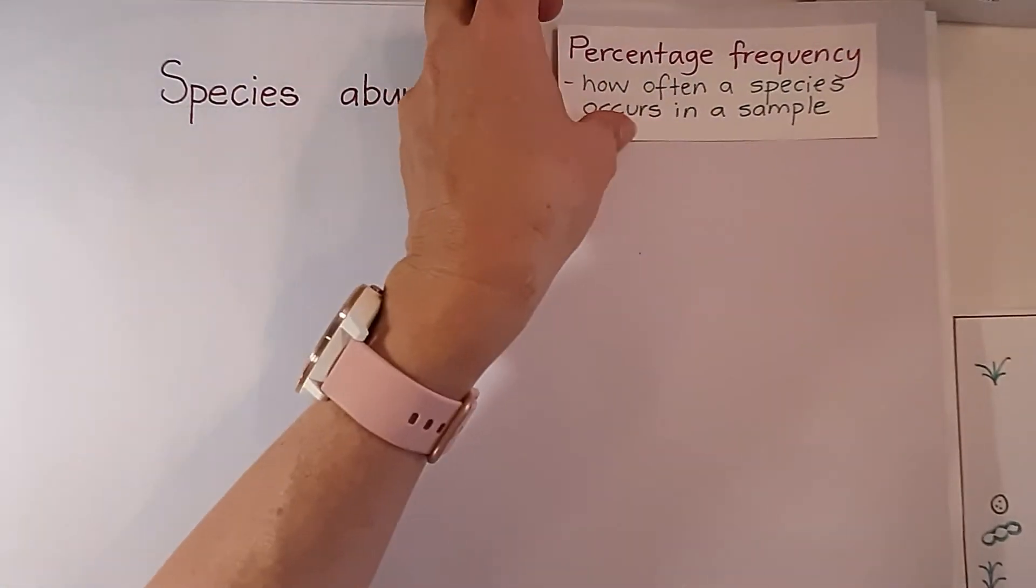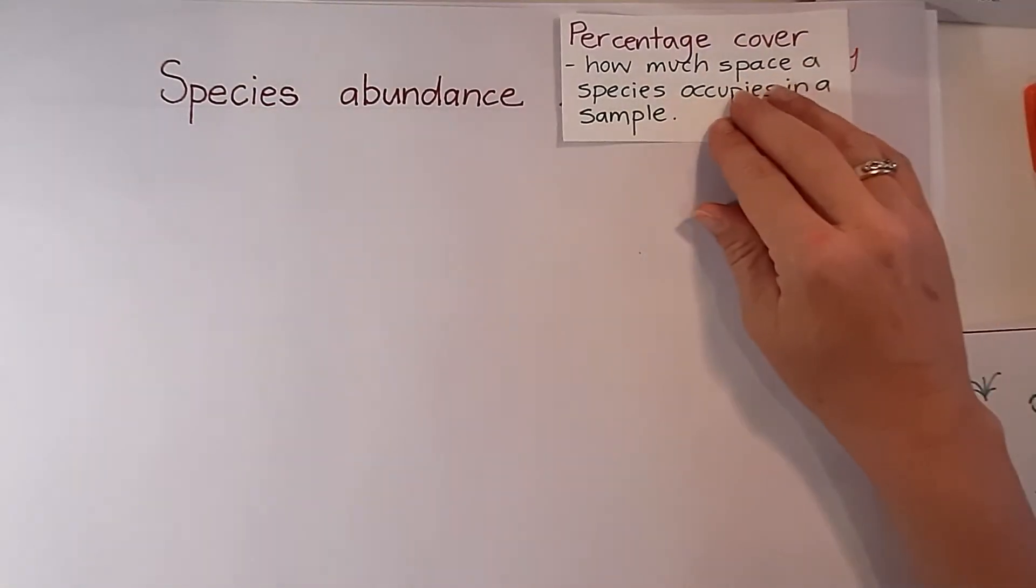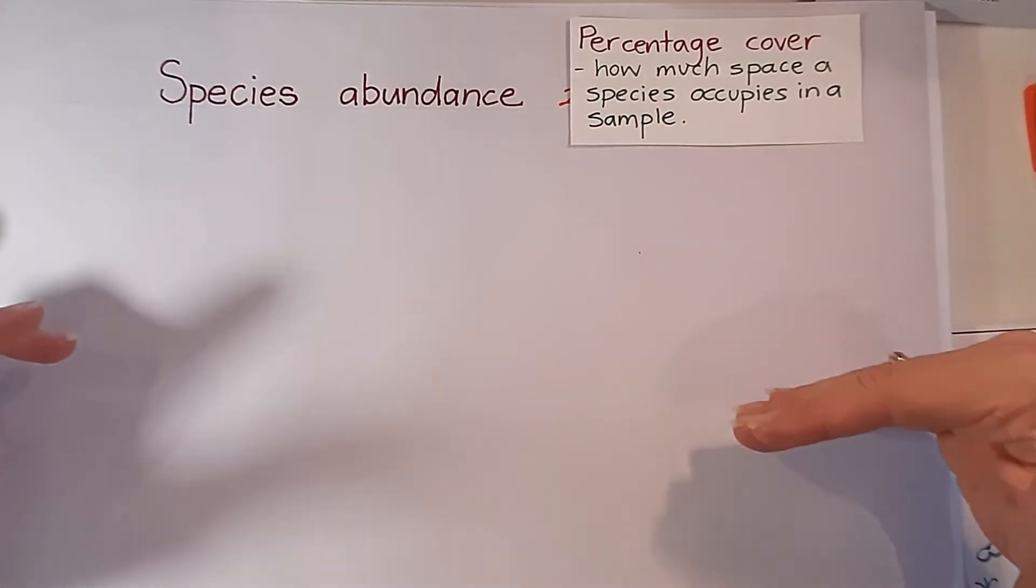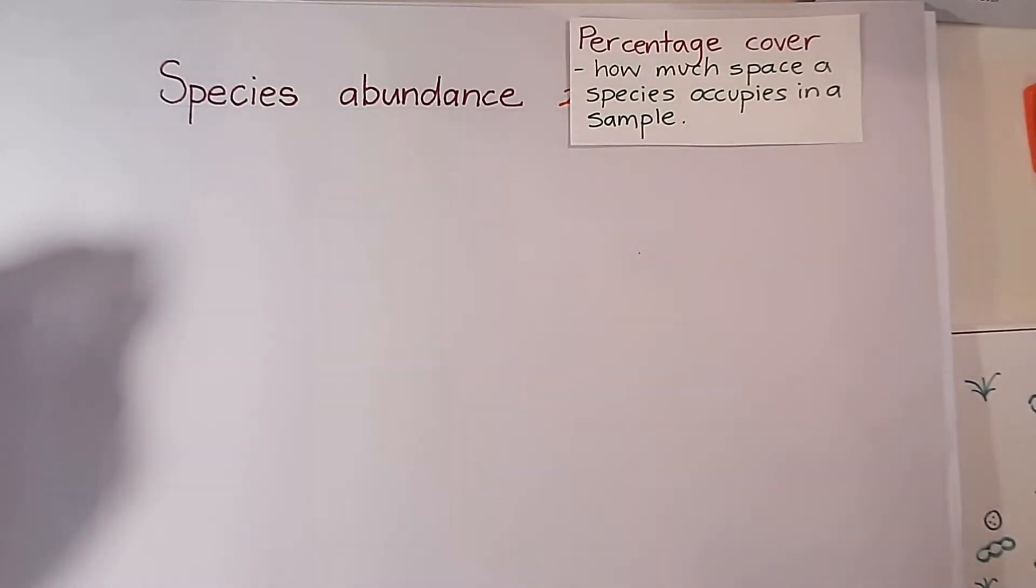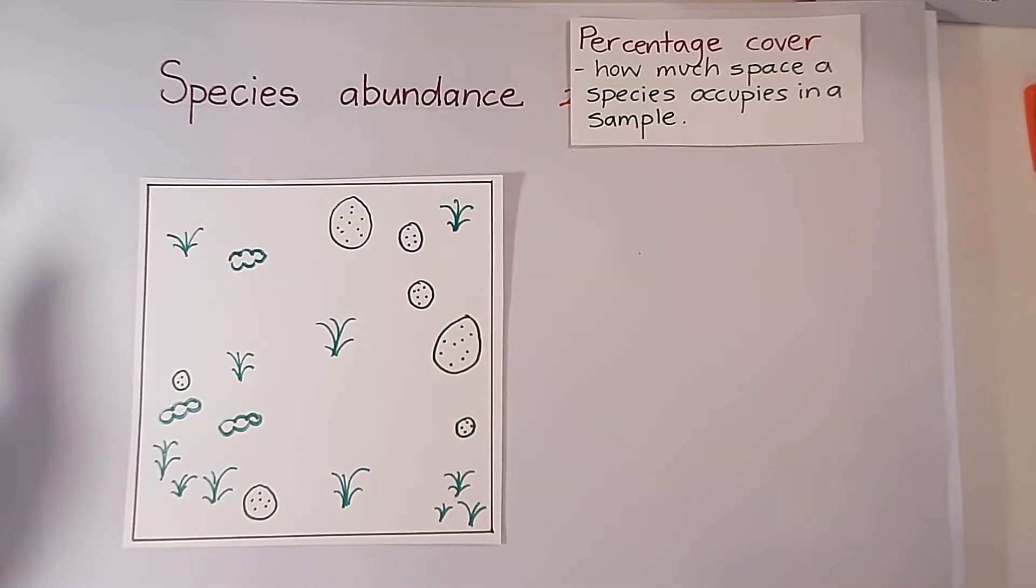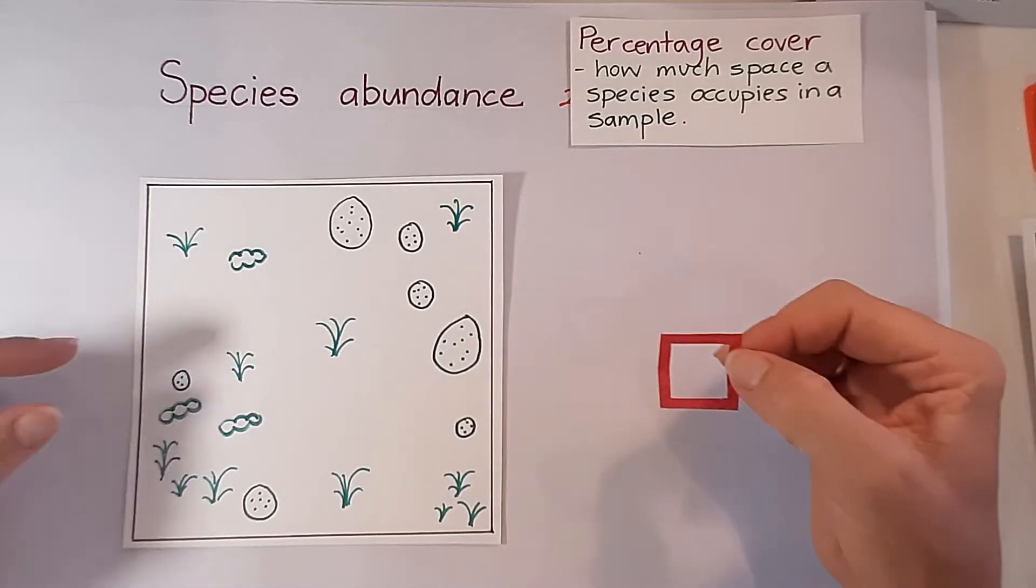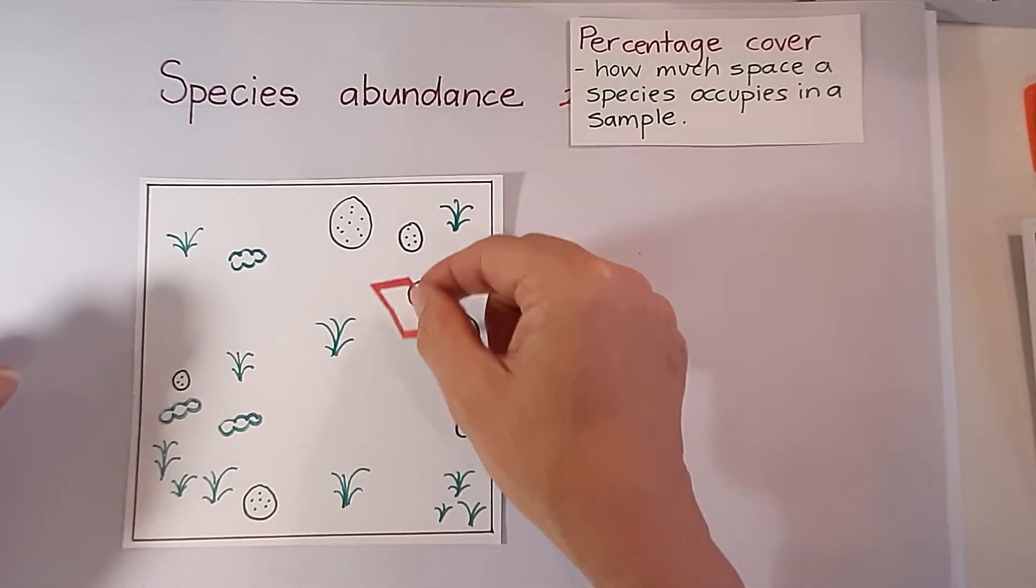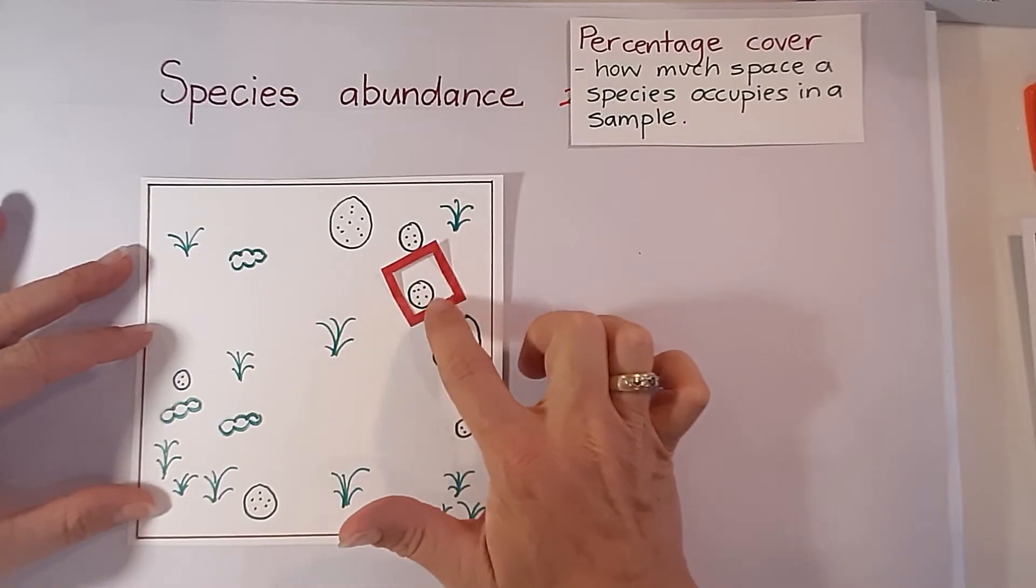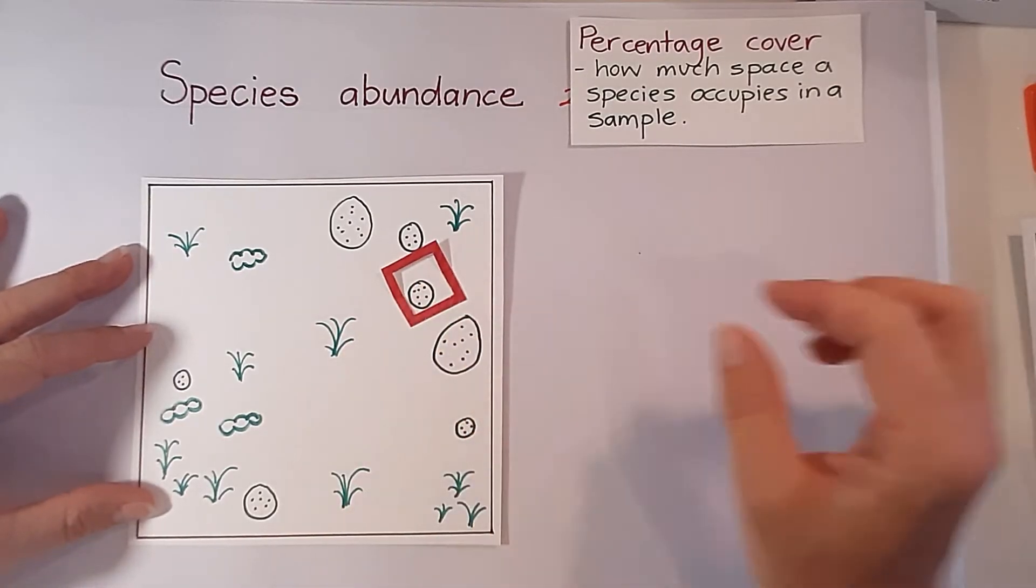It's a little bit different if we're going to look at percentage cover. Percentage cover asks us how much space a species occupies in a particular sample. So again we could take that sample and we could ask ourselves how much of the species covered in each quadrat. So in this case we could look at this quadrat and say well that's about 25 percent cover.